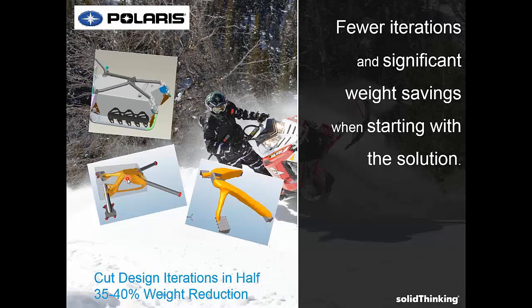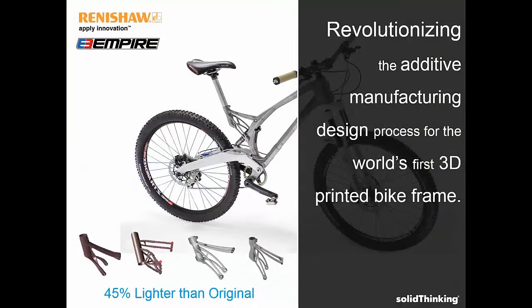You can see the concepts which were generated using Inspire. The next work is from Renusha — a great example of using concept generation to create the ideal shape for a given load case, partnered with additive manufacturing. Renusha and Empire Cycles in the UK designed and manufactured the world's first 3D printed bike frame, and the shape of the seat post in this case was generated using Inspire. This is the concept they generated and they 3D printed this component.